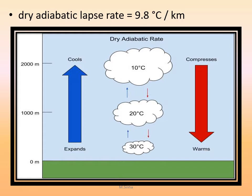This picture shows the dry adiabatic lapse rate. Air is moving upward — this is unsaturated air, which is why it is called dry. Adiabatic means a change of temperature with increasing height. The air starts its journey from zero meters at a temperature of 30 degrees centigrade, becomes 20 degrees centigrade at a height of 1000 meters, and falls to 10 degrees centigrade at 2000 meters. This illustrates the dry adiabatic lapse rate of 9.8 degrees centigrade per kilometer.